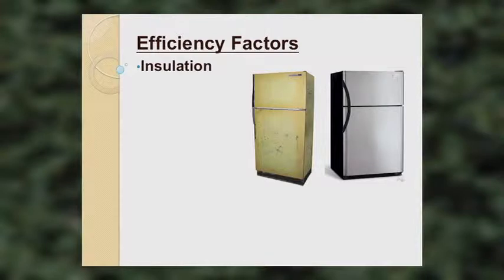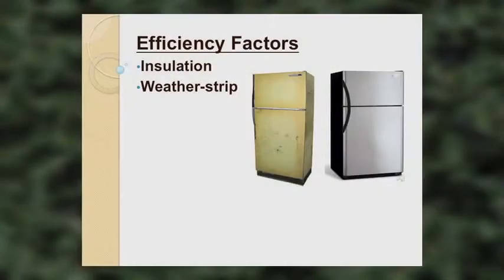Let's look at what affects the efficiency of a refrigerator. First, insulation — the job of insulation is to keep the heat out. We have a compressor system inside removing heat from inside the refrigerator and depositing it outside. Insulation keeps that heat from getting back in. We also have weather stripping to keep the cool air in and warm air out, so we don't have air leakage in our refrigerator.